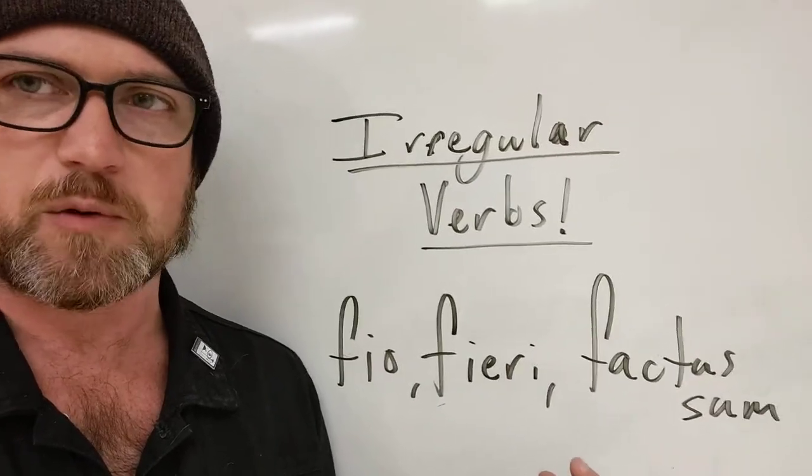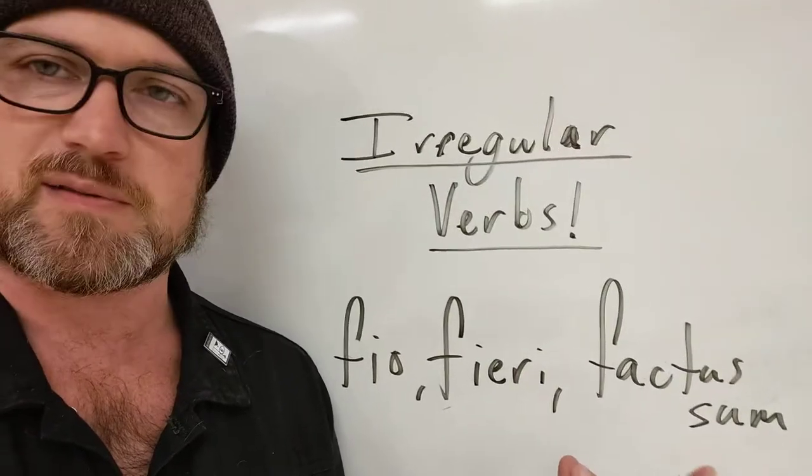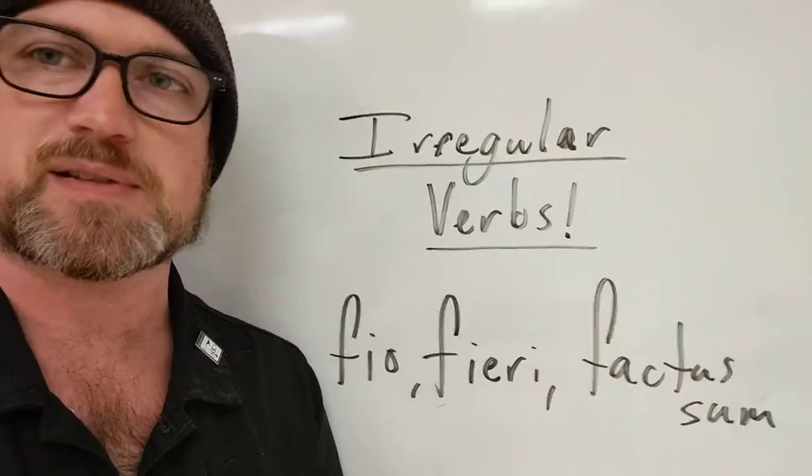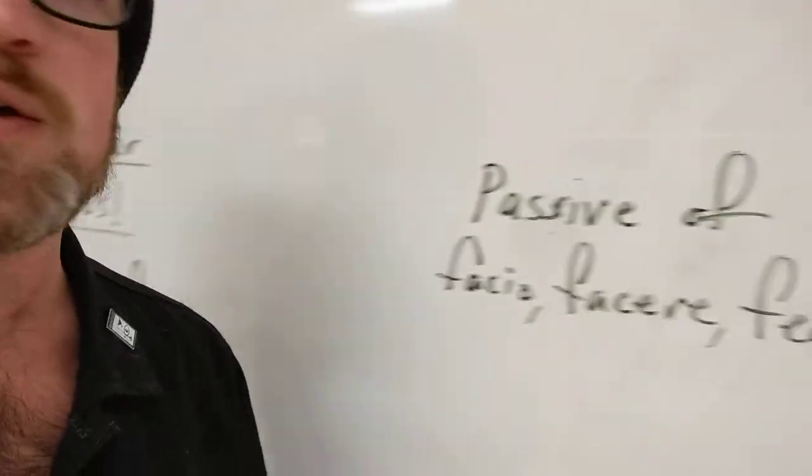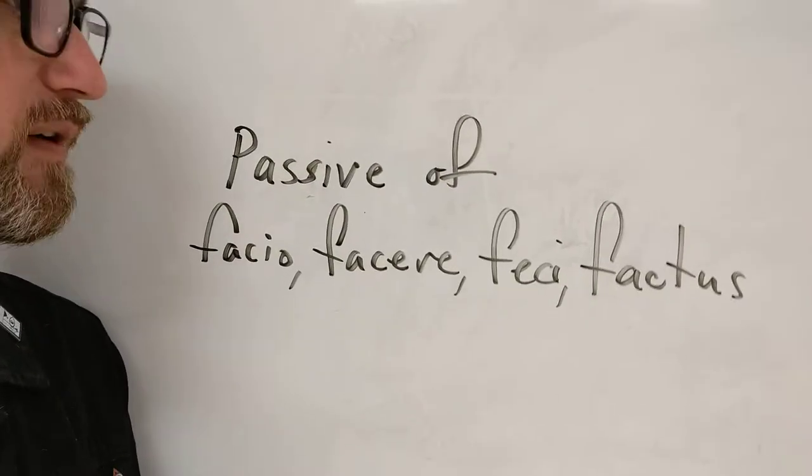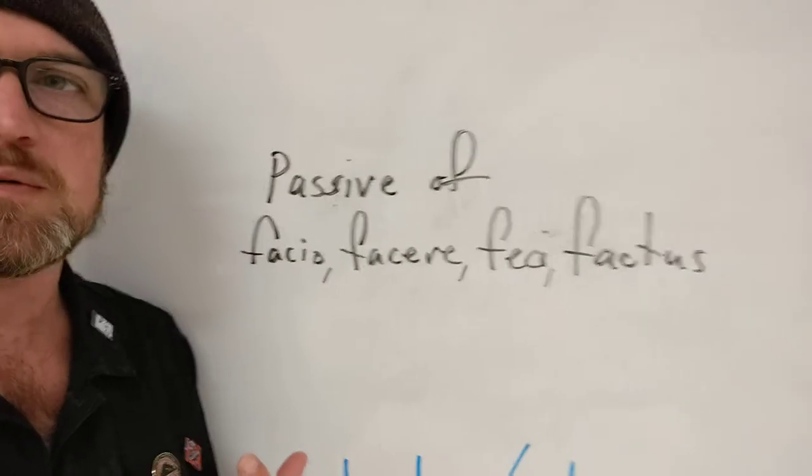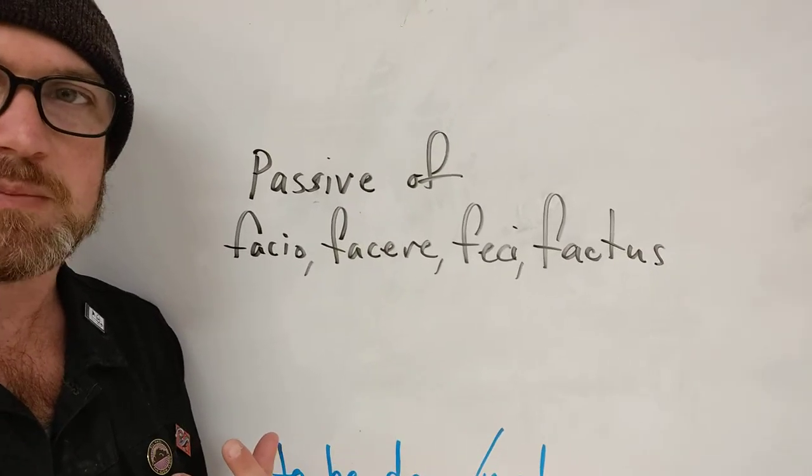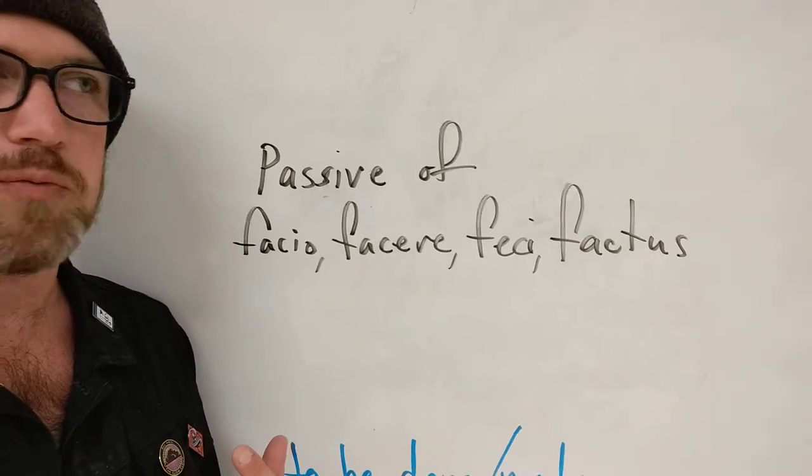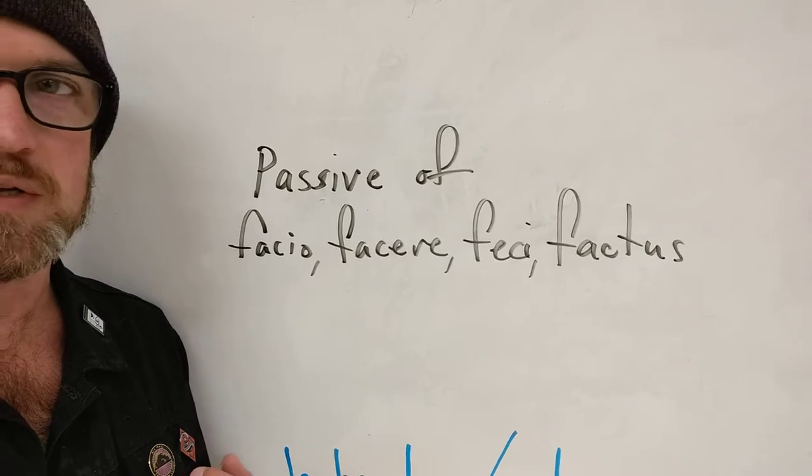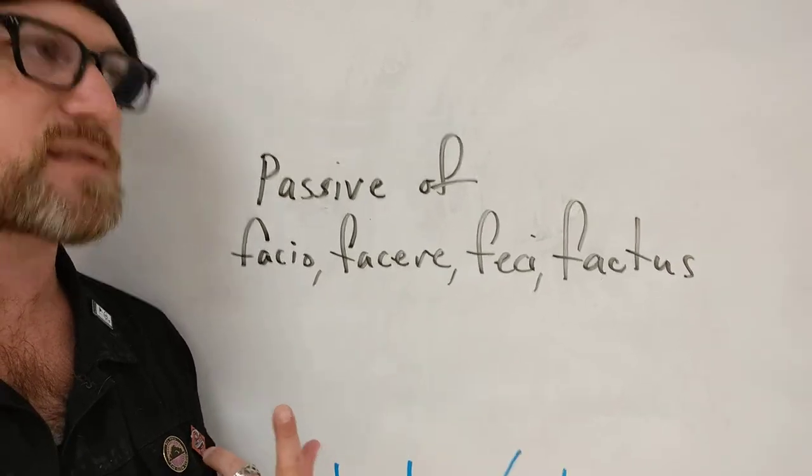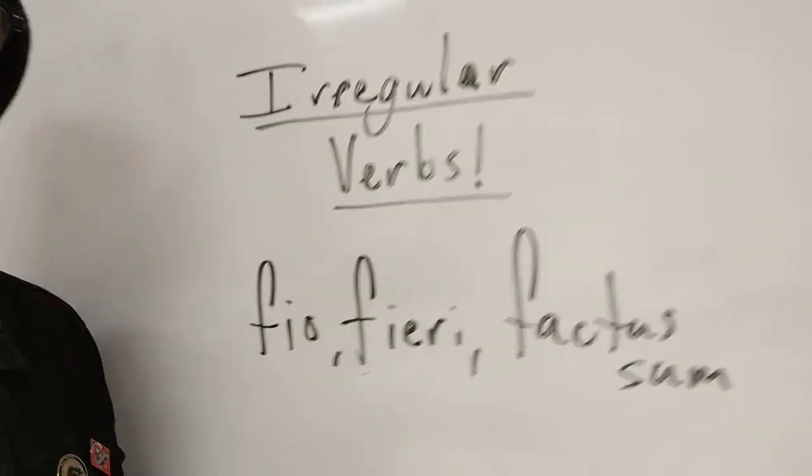You might be thinking, is this some sort of weird deponent verb? The answer is no, it's sort of the opposite. What fio is - it's the passive of facio. That is to say, when you see facio in text and you want it to be passive, they probably aren't going to put a passive ending on facio. Instead, they're going to use fio.